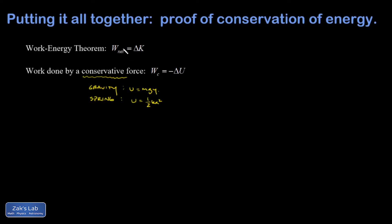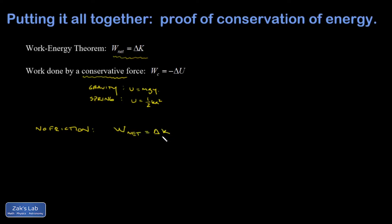This goes really quickly now. Going back to the work-energy theorem: the net work on an object causes a change in kinetic energy. Let's look at the case where there's no friction — in other words, I only have conservative forces acting. Then the net work gives me a change in kinetic energy, and if there are only conservative forces acting, the net work is just the work done by those conservative forces.